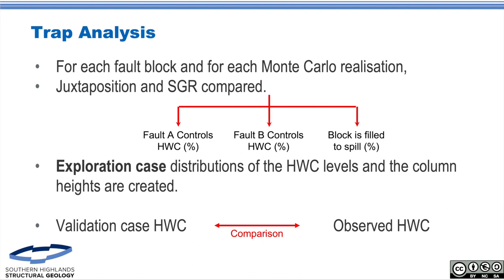Within the trap analysis, we take one or many faults and look at which is the controlling factor — is it the A fault, is it the B fault, or is it filled to spill? We go through realization by realization, looking at both juxtaposition and SGR separately. Realization one: is it fault A? Yes. Realization two: fault B. Realization three: fault A. Realization four: filled to spill. Realization five: fault A — and so on through our 10,000 cases.